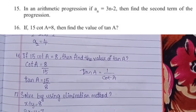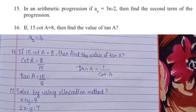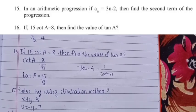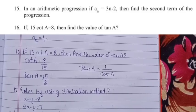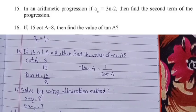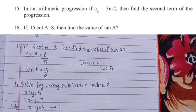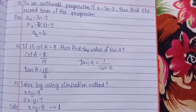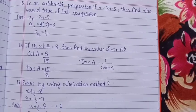If 15 cot A = 8, find the value of tan A. Since tan A = 1/cot A, and 15 cot A = 8 means cot A = 8/15, therefore tan A = 1/(8/15) = 15/8.